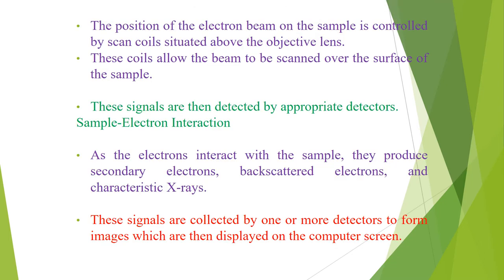The position of the electron beam on the sample is controlled by scan coils situated above the objective lens. These coils allow the beam to be scanned over the surface of the sample. As the name of the microscope suggests, this scanning enables information about a defined area on the sample to be collected as a result of the electron-sample interaction. A number of signals are produced and detected by the appropriate detector.